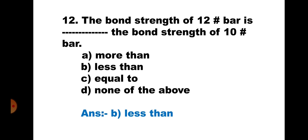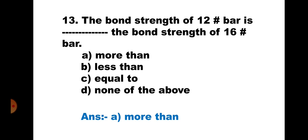Question 13. The bond strength of a 12 tor bar is __ the bond strength of a 16 tor bar. A. More than, B. Less than, C. Equal to, D. None of the above. Since 12 tor is less than 16 tor, the bond strength of the 12 tor bar will be more. Hence, the correct answer is A. More than.